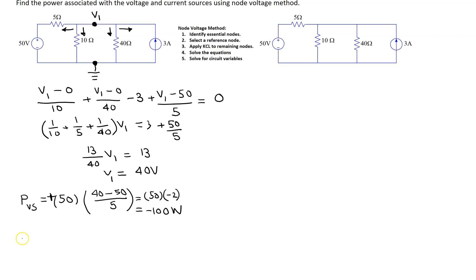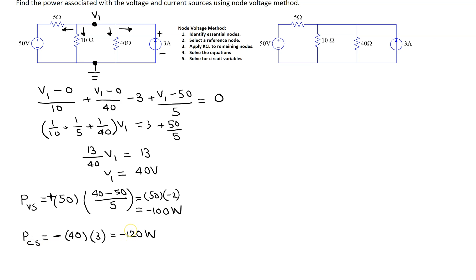For the current source, the voltage drop across it is node voltage V1. Since node voltages are defined as a positive voltage rise with respect to ground, we can associate this polarity with the current source. The power is V1 multiplied by the current, which is 40 times 3 amps. Applying passive sign convention, the current is entering the terminal marked negative, so we write a negative sign. This gives minus 120 watts, showing the current source is also supplying power in this circuit.